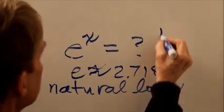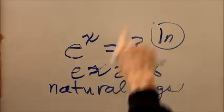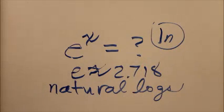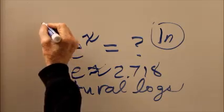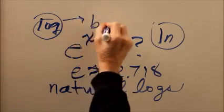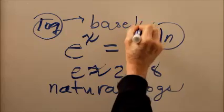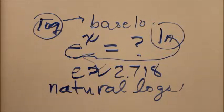That's where the LN comes from. It stands for logarithm unnatural or something like that. I don't know. LN means natural log. Log means the base is 10. Natural log means the base is e.